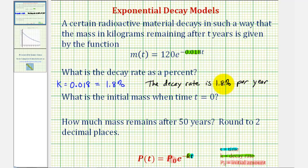We don't include the negative sign here because we've already stated that it is decay. Next, we want to know what the initial mass is when time t equals zero. Well, we should recognize this is going to be P₀, or in this case, 120 kilograms.